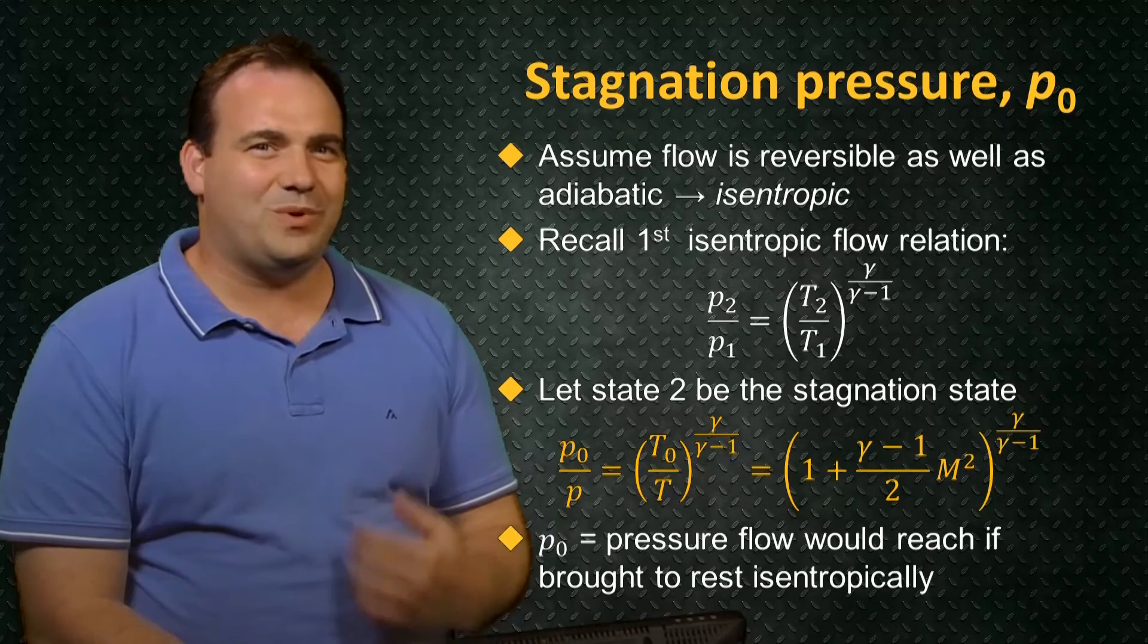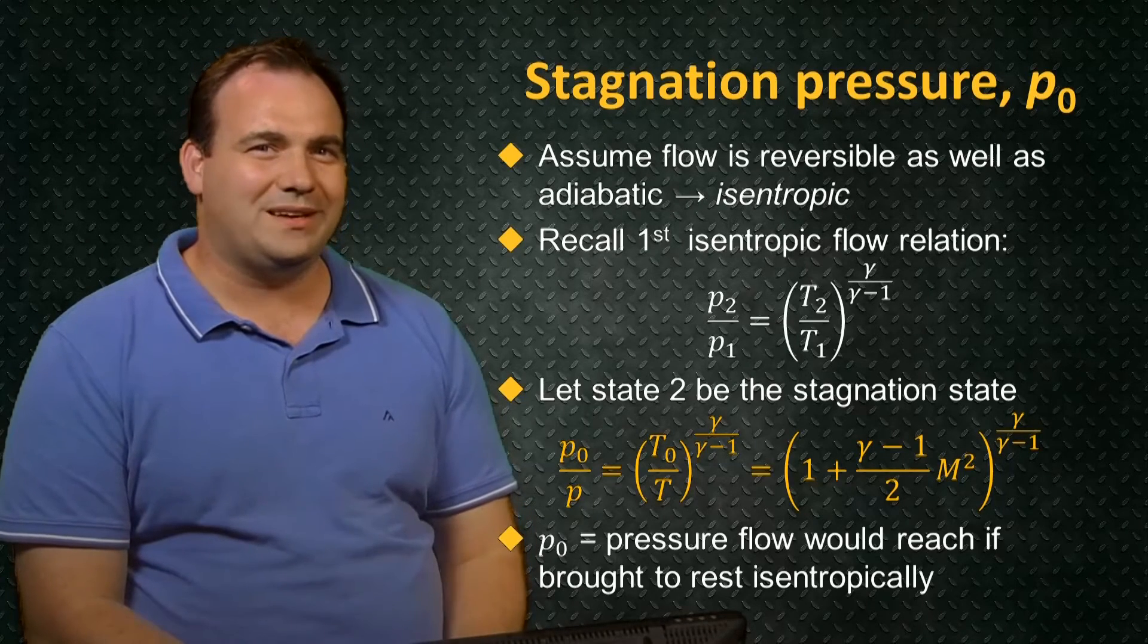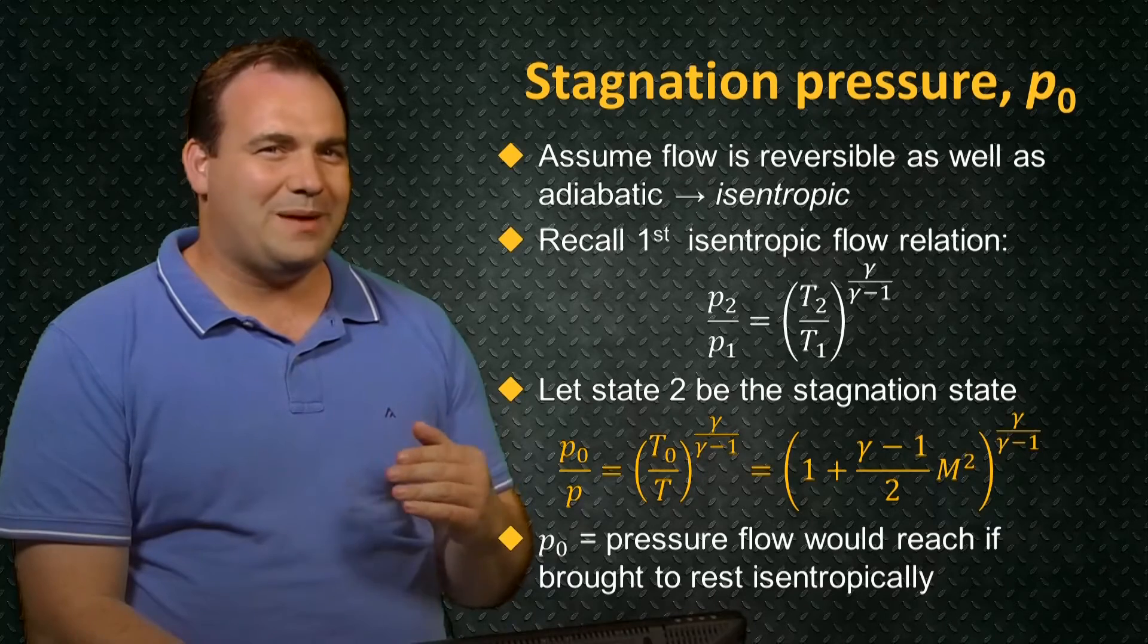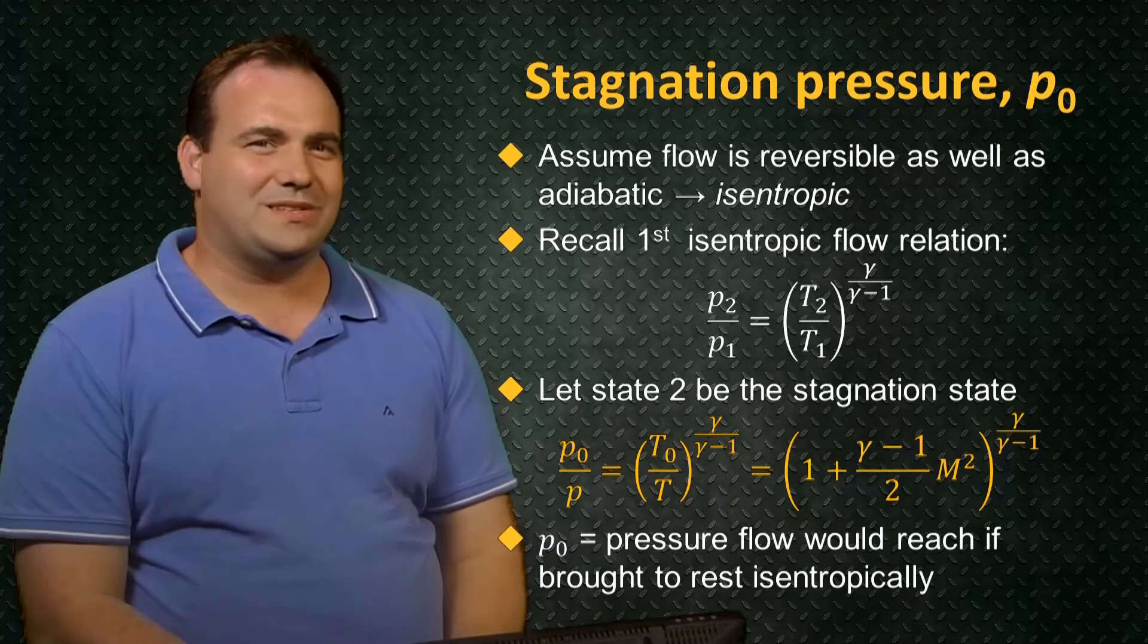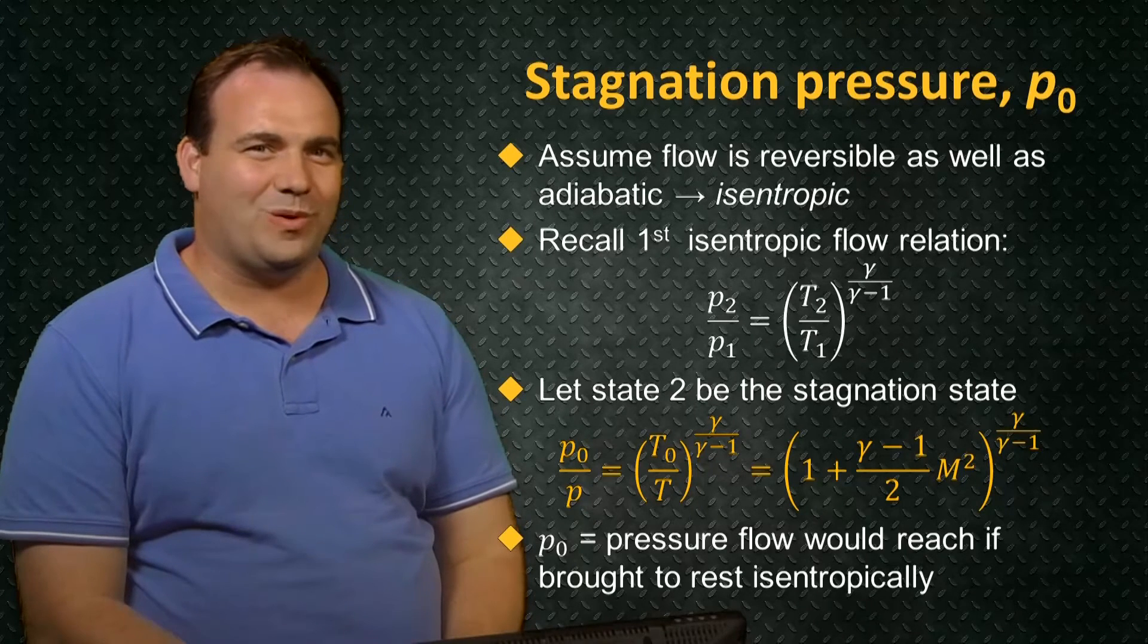This is the factor by which the pressure would be multiplied if the flow at Mach number M was brought to rest by an isentropic process. Let's make use of this equation to solve an example problem.